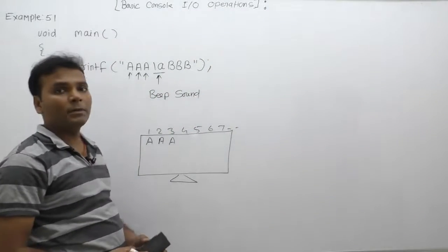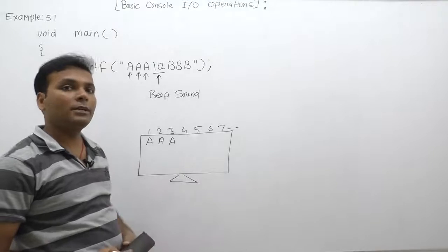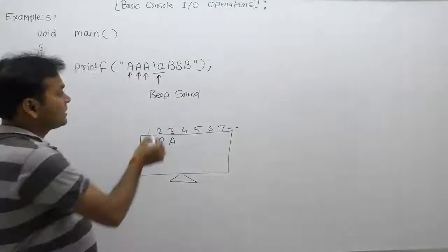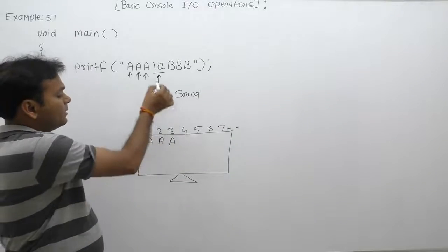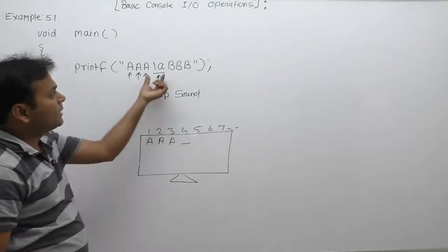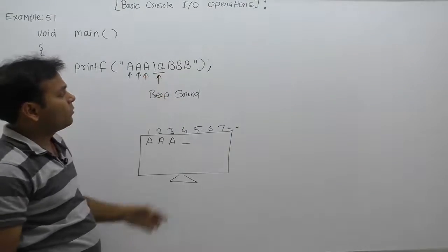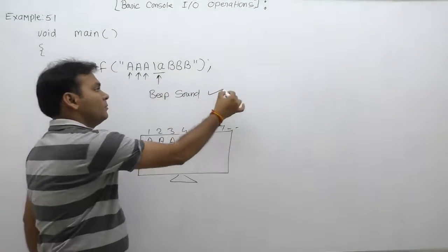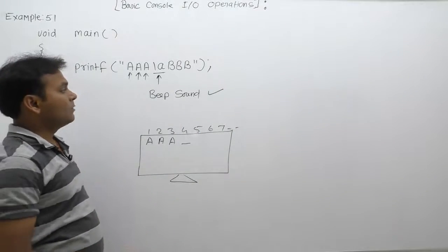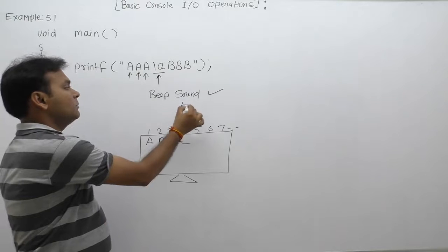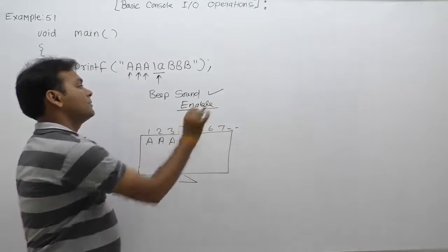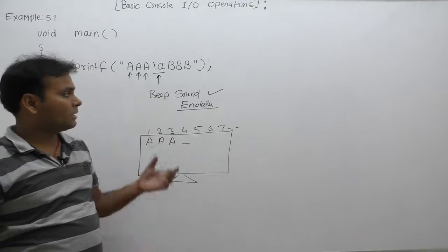Slash a is not a printable character. It is a non-printable character or escape sequence character. It has some specific meaning. Whenever slash a is encountered inside printf, according to that symbol, the system will generate some sound. To listen to the generated sound, you must enable your sound device.